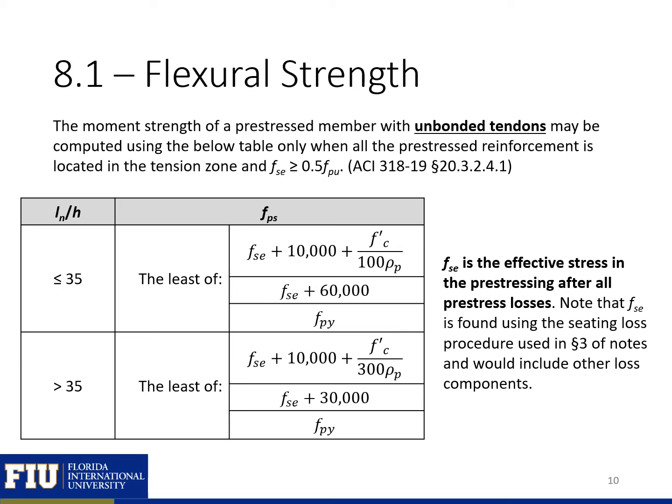The equations we looked at on the last couple of slides were all for bonded reinforcement, where we have a bond between the strand and the surrounding concrete or grout. If we have unbonded tendons, then we need to determine the stress at ultimate failure using the equations provided in the given table. Note that F_se here is the effective stress in the pre-stressing after all pre-stress losses.